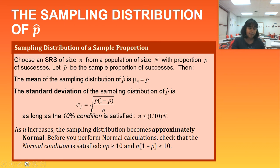So let's wrap up. As n increases, the sampling distribution of p-hat becomes approximately normal. So again, as your sample size gets bigger, your distribution becomes more normal shaped. If it's normal shaped and you check the condition, the 10% condition, then you can use these calculations instead.